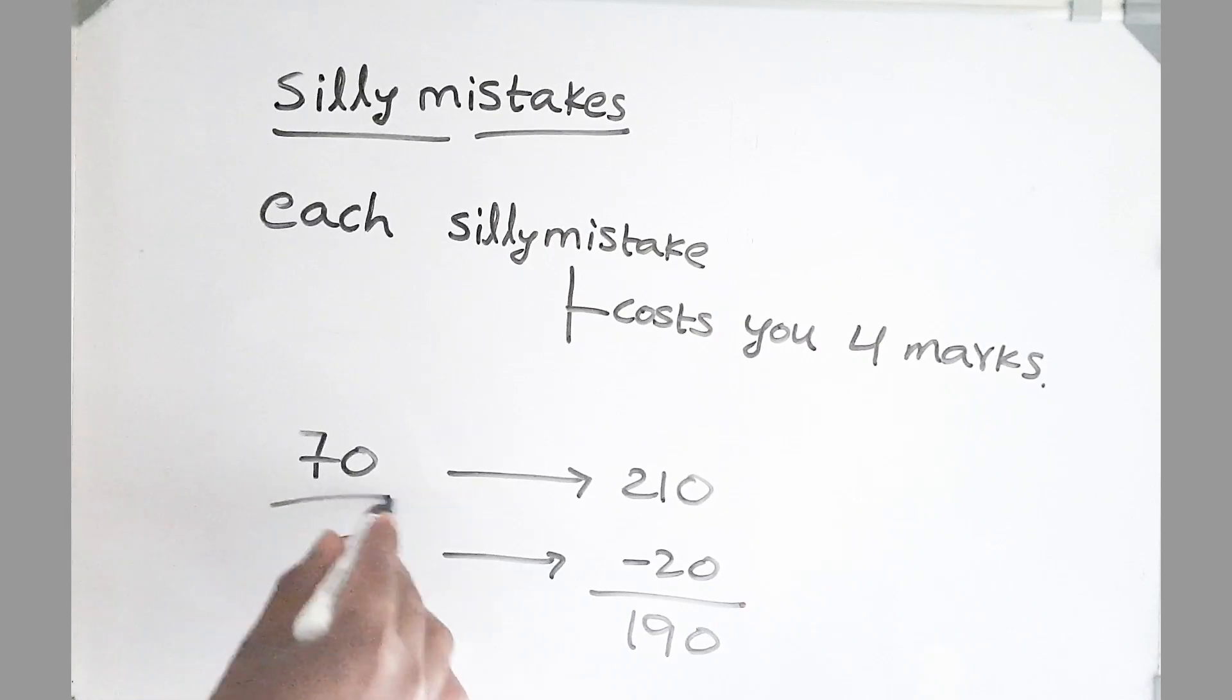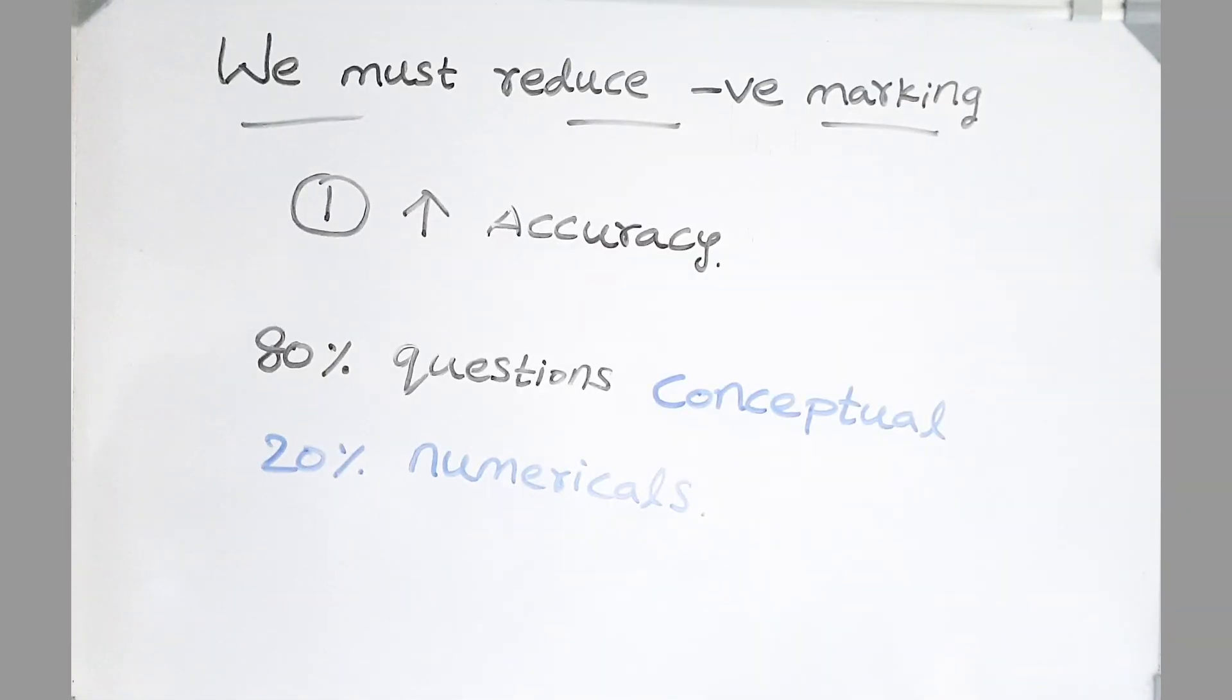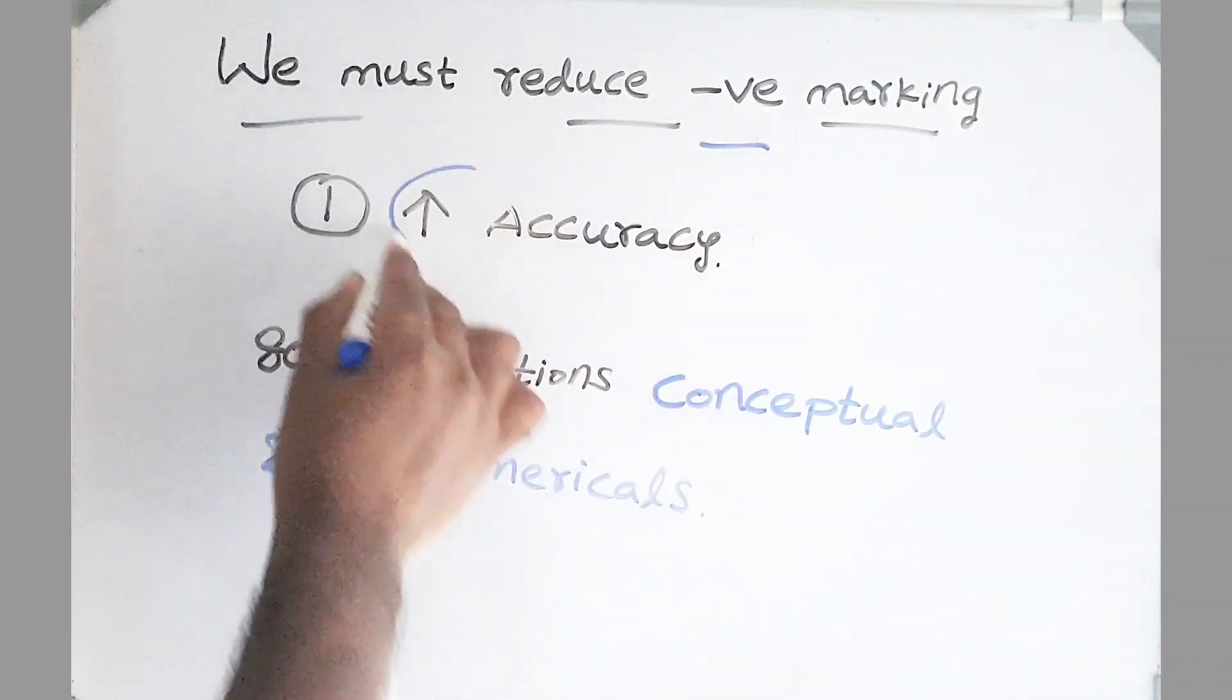For the same, if you consider 70-80 questions, you will be getting 190 marks. Friends, we must reduce the negative marking by increasing the accuracy.